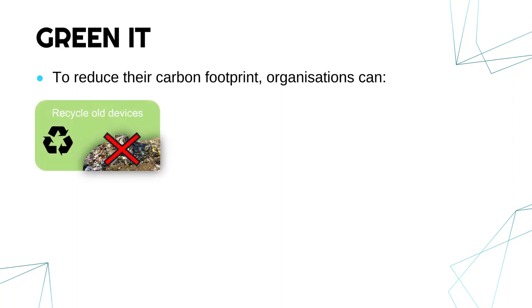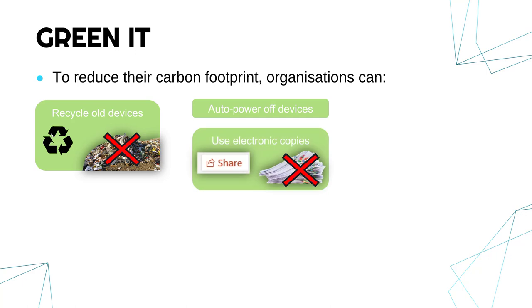Organisations can make sure their old computers aren't just thrown in landfill — they should be recycled so they can be reused and not wasted. They can also set policies to power off devices automatically, so overnight all the lights and computers aren't left on. For example, setting computers to turn off after 30 minutes of inactivity will save electricity. Organisations can also use electronic copies instead of printing — every time you print, the ink has environmental costs and printing is a waste of paper and ink. Better to share work electronically instead.